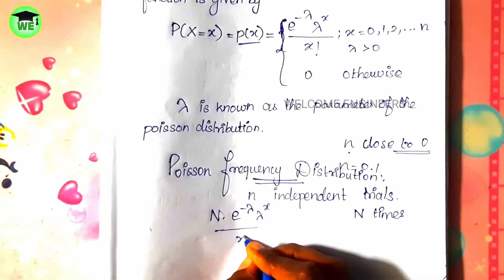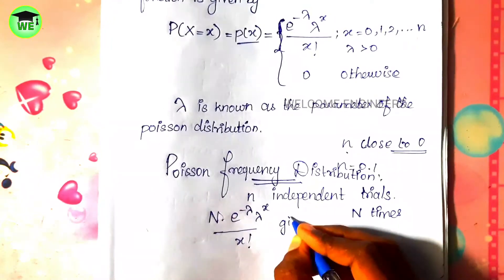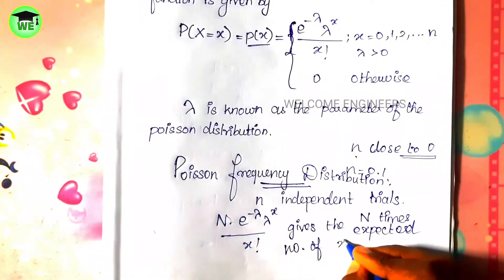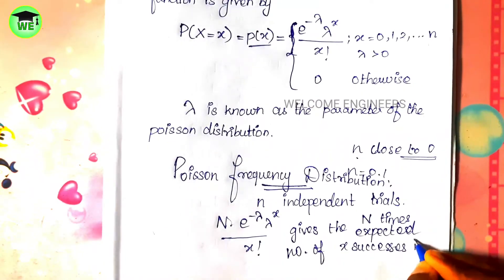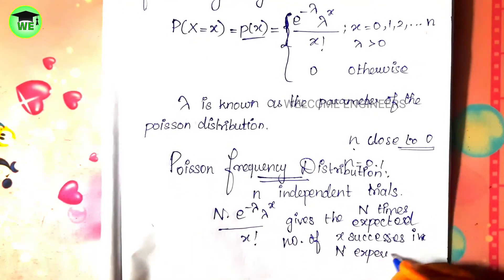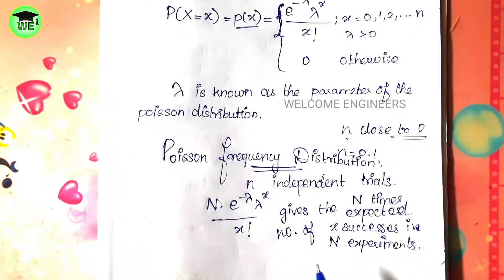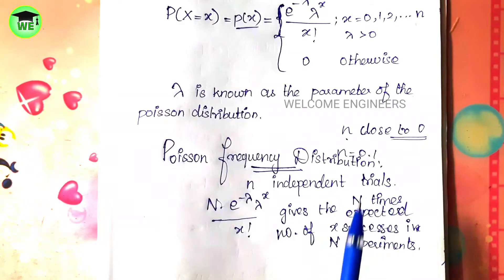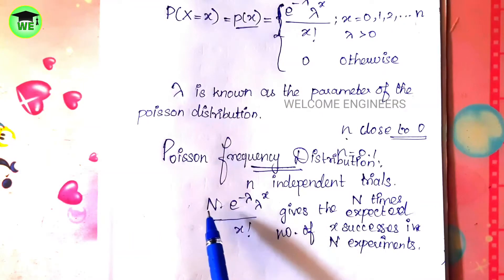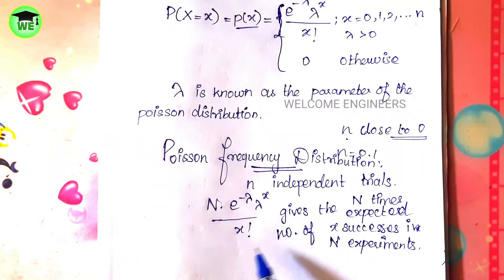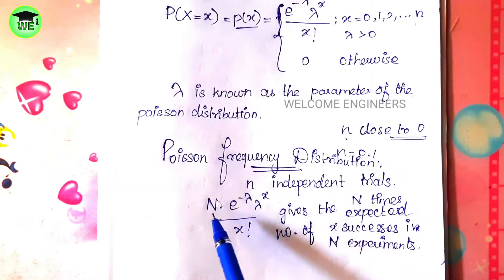When we repeat the experiment n times under certain conditions, the formula n · e^(-λ) · λ^x / x! gives the expected number of x successes in n experiments. The possible number of successes together with the expected frequency is said to constitute a Poisson frequency distribution, represented by n · e^(-λ) · λ^x / x!.